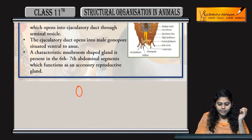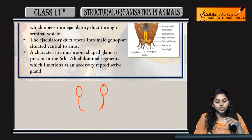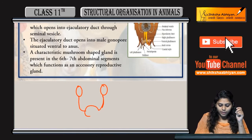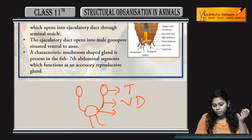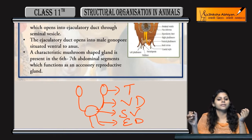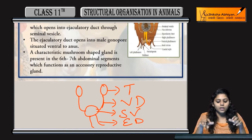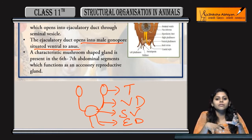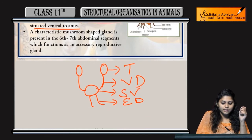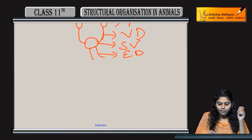From the testes arise vasa deferentia, which lead to an ejaculatory duct and seminal vesicle. This ejaculatory duct then opens into a male gonophore situated ventral to the anus.